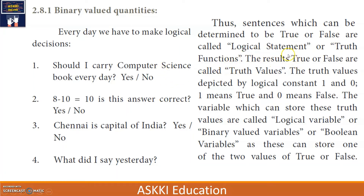The result will be either true or false — these are truth values. True is represented by logical constant 1, and false is represented by 0. The variables that store these truth values are called logical variables, binary-value variables, or Boolean variables. In these variables, we store either 1s or 0s — true or false Boolean values.